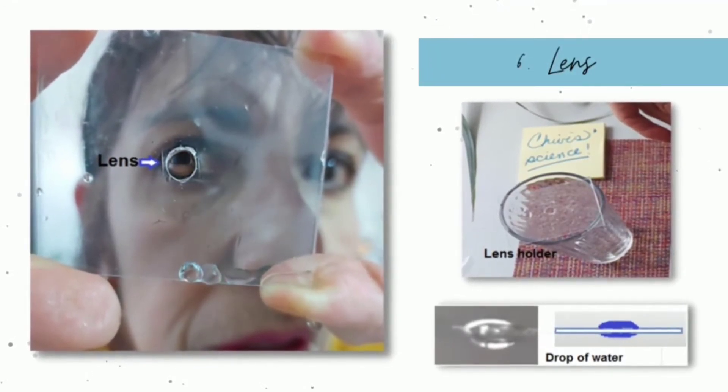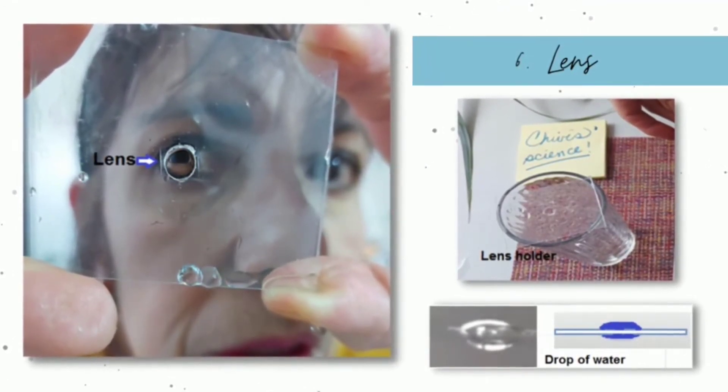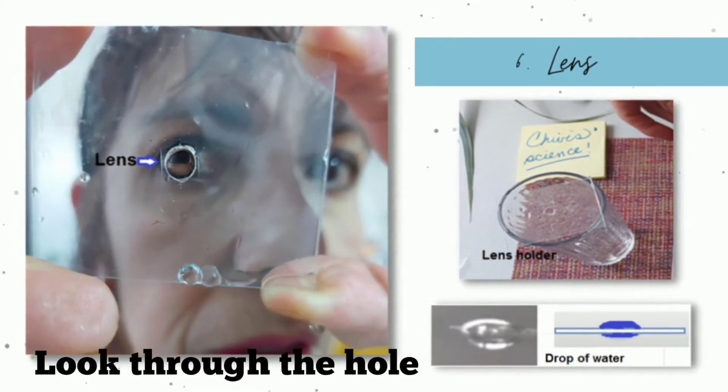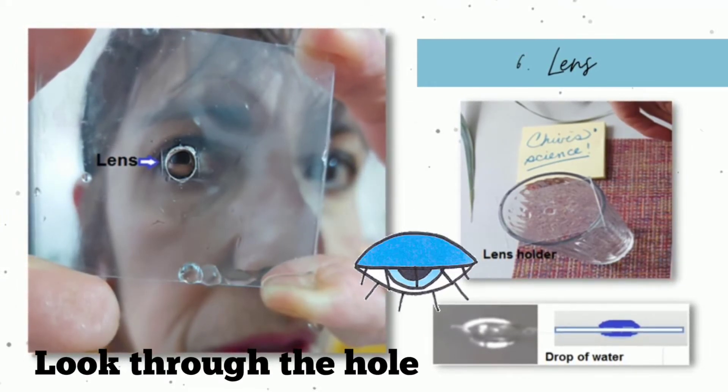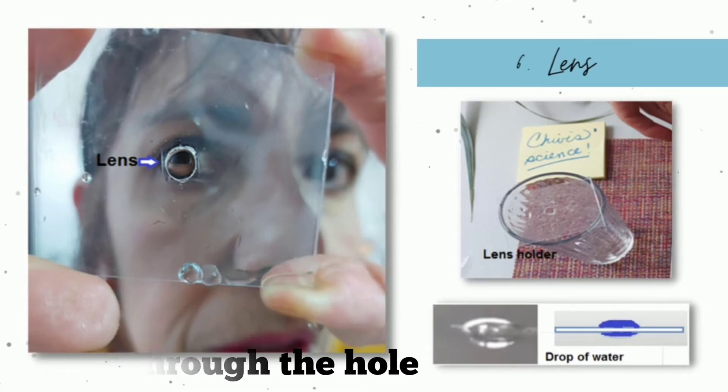In this step, you have to make sure that the drop of water works. As you can see here, you have to look through the hole and while you do this, the drop of water mustn't fall.